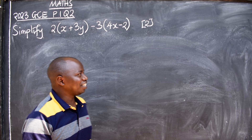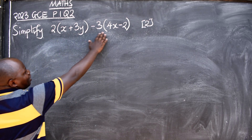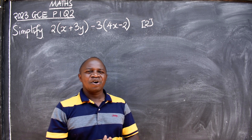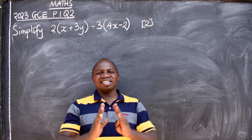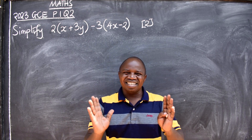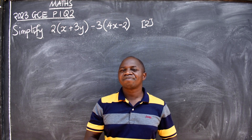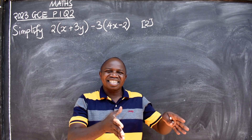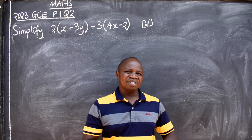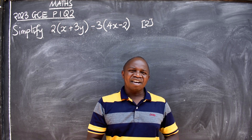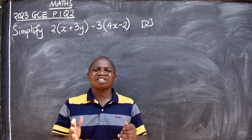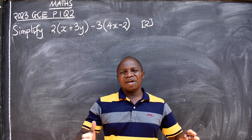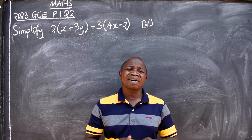Now let's look at the question. We are given this expression and we need to simplify it. The first thing you need to do is look at the expression that has been given to you. This expression has got brackets — that is your starting point. Whenever you are given an expression that has got brackets, you start from there and get rid of the brackets.